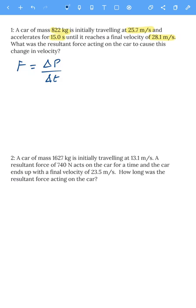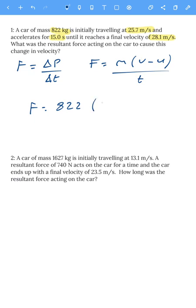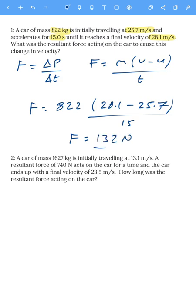The change in momentum is the final momentum minus the initial momentum, so force equals mass times the final velocity minus the initial velocity, divided by time. Putting in the numbers: 822 multiplied by 28.1 minus 25.7, divided by 15 seconds. That gives a force of 131.5 or 132 newtons.